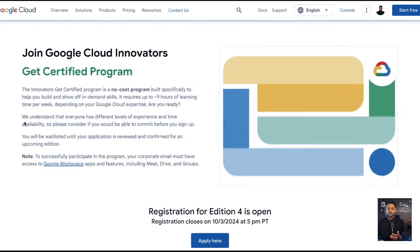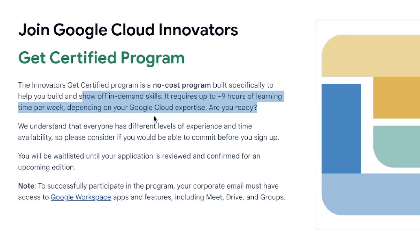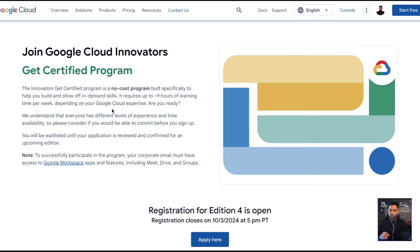Looking at the Google Certification Program — the Innovators Get Certified program — it's a no-cost program built specifically to help individuals build and show off in-demand skills. It requires nine hours of learning time per week. You can break that down into three hours three days a week, or if you pace yourself you can do those nine hours in one day depending on your schedule.